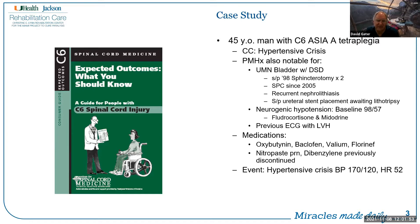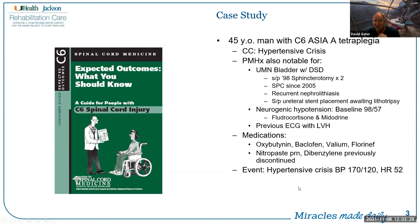He has a ureteral stent placed while awaiting lithotripsy, where they hope to break those stones down into powder. Usually he has neurogenic hypotension with a baseline blood pressure of 98 over 57. He has been on Florinef and Midodrine to help keep his blood pressure up in that range. He has a previous EKG with left ventricular hypertrophy. He's currently on oxybutynin for his bladder, Baclofen for spasticity, as well as Valium and Florinef. They've taken him off Midodrine, and he had previously been on Dibenzyline, which had been discontinued; he was using nitropaste on a PRN basis. The current crisis is that his blood pressure is 170 over 120 and his heart rate is 52 beats per minute — so this is suboptimal. I want you to be thinking through this as we go forward, and maybe you can help me solve this at the end.